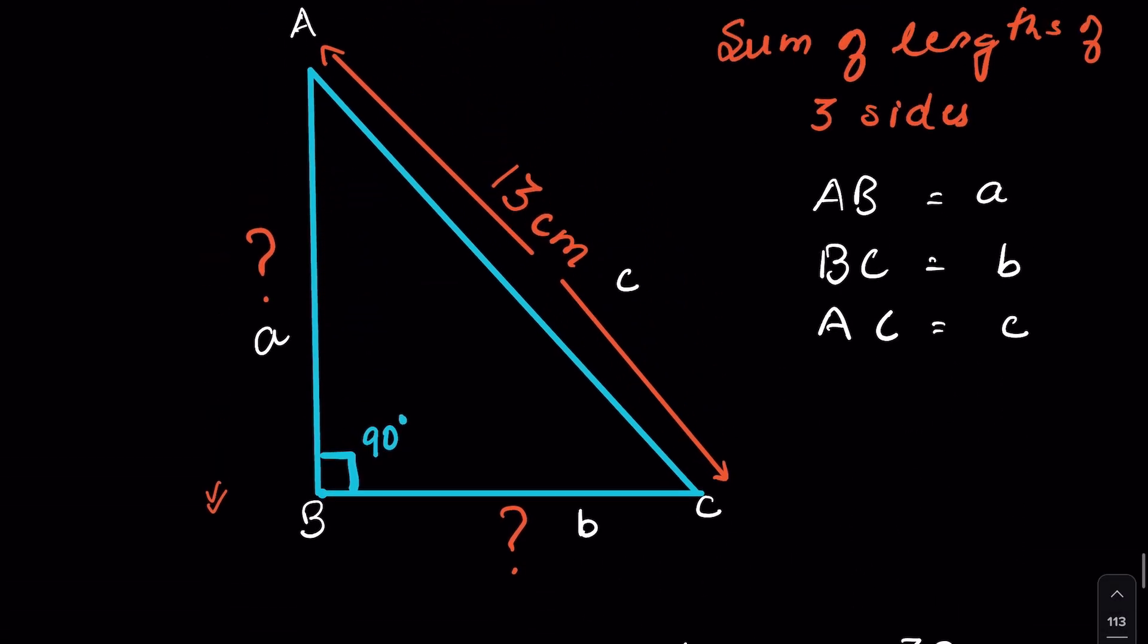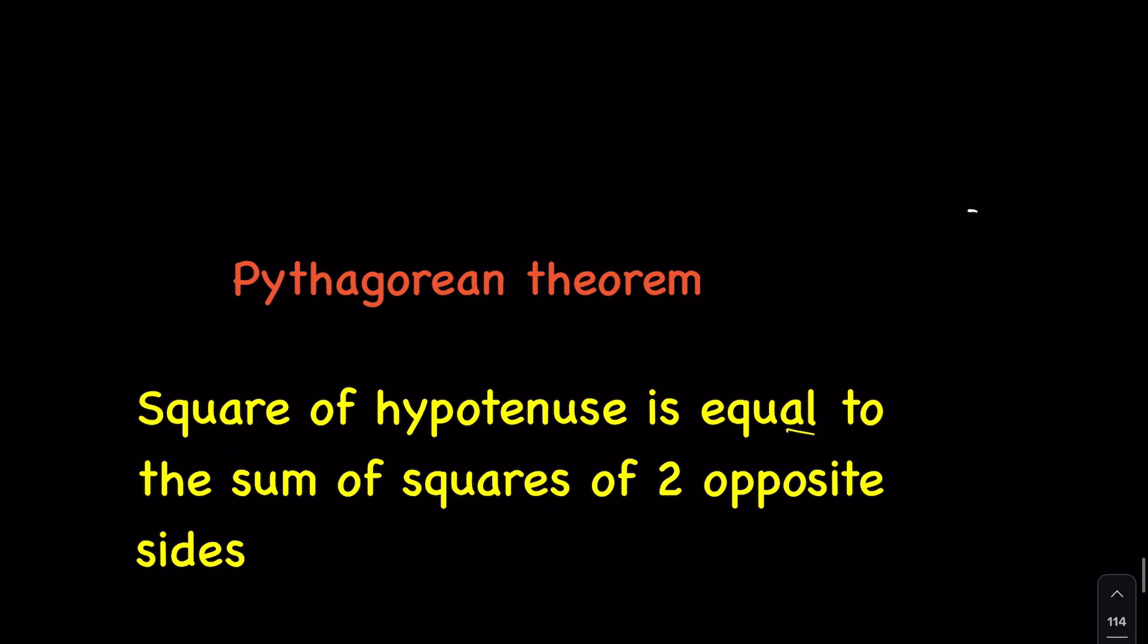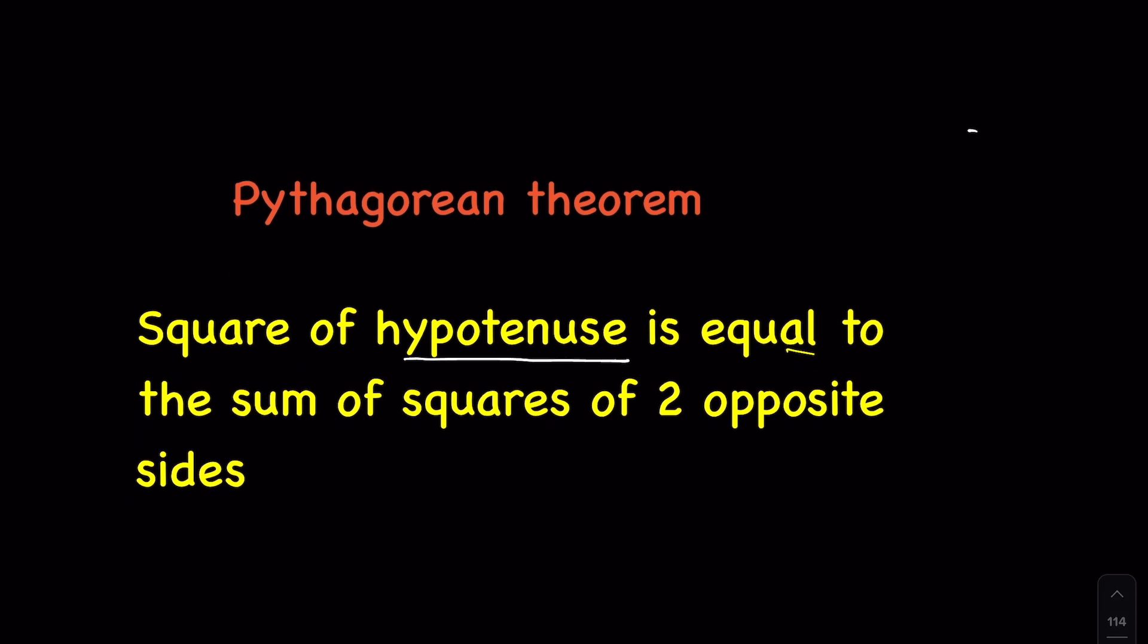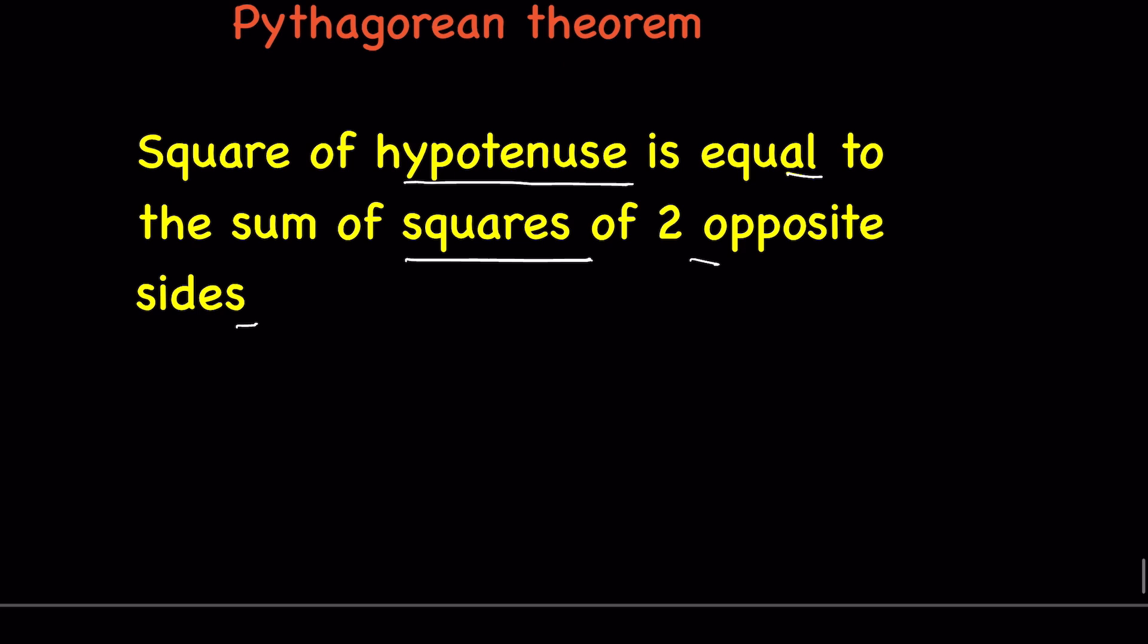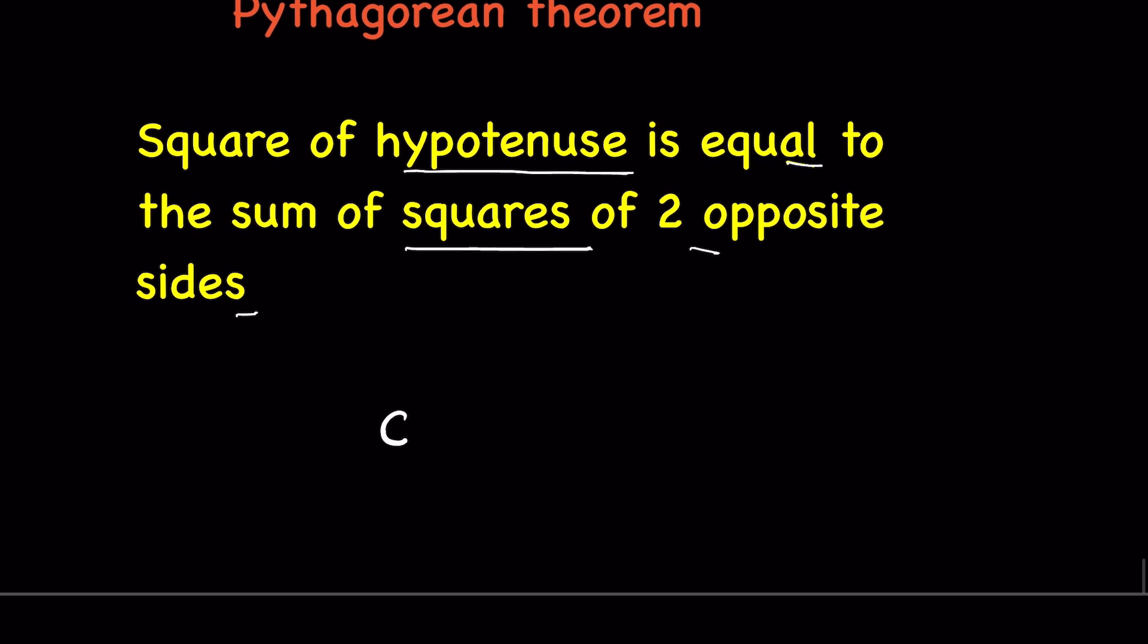This is a right-angled triangle with one angle at 90 degrees. As per the Pythagorean theorem, the square of the hypotenuse is equal to the sum of squares of the two opposite sides. That means c² = a² + b².